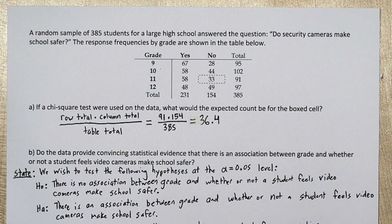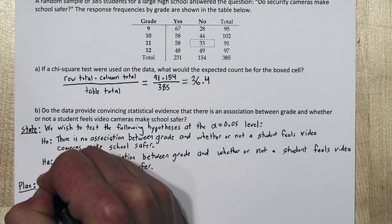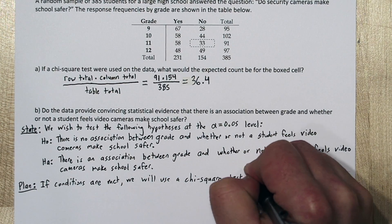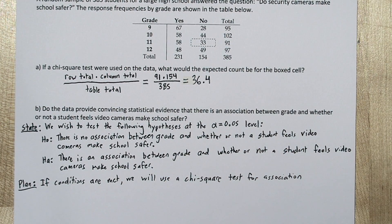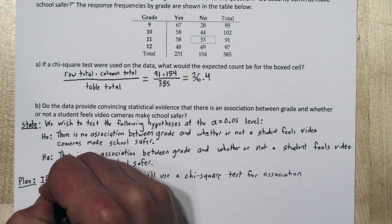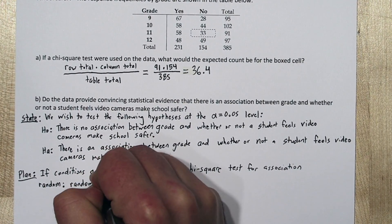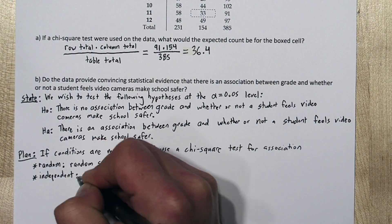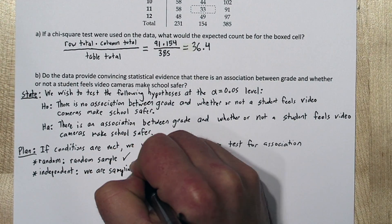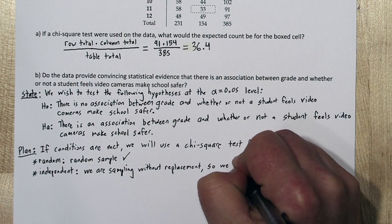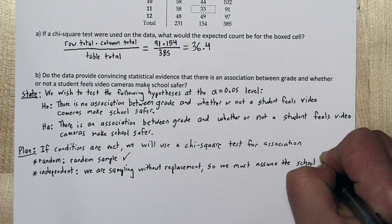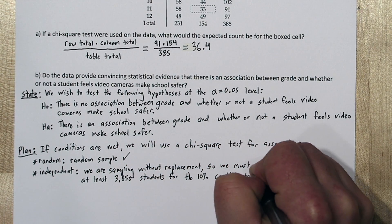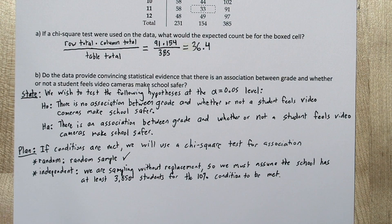In the plan step, we need our inference method and to check conditions. If conditions are met, we will use a chi-square test for association. For the random condition, the problem states this was a random sample, so that condition is met. For the independence condition, since we're sampling without replacement, we assume the school has at least 3,850 students — the 10% condition. It does say it's a large school, so this condition is likely met.